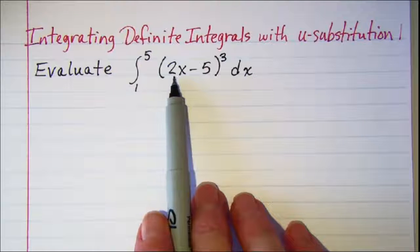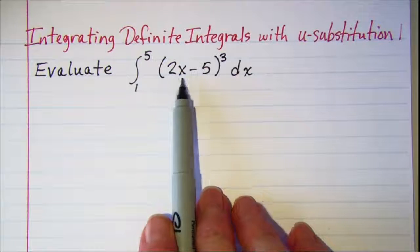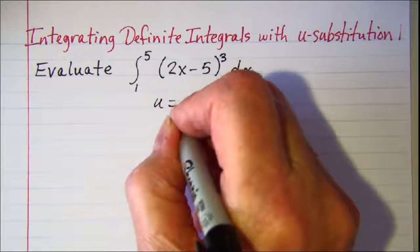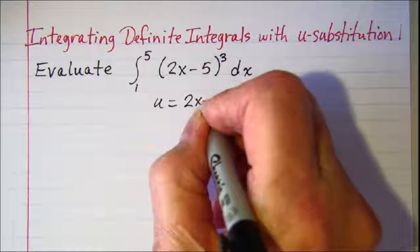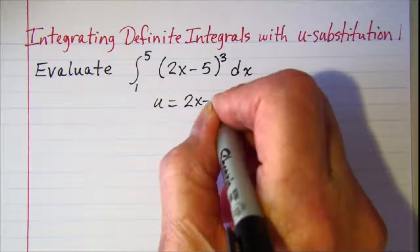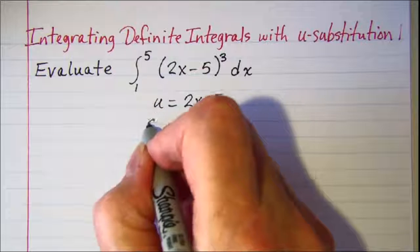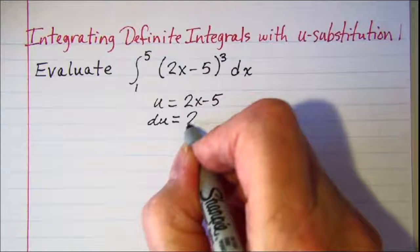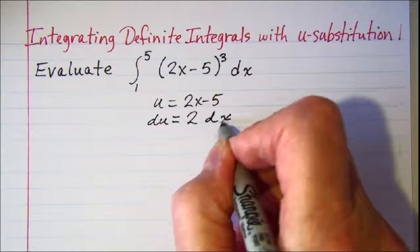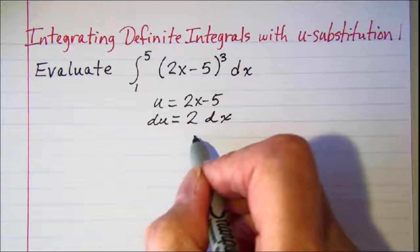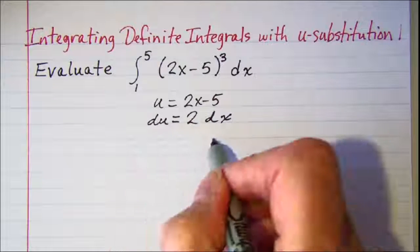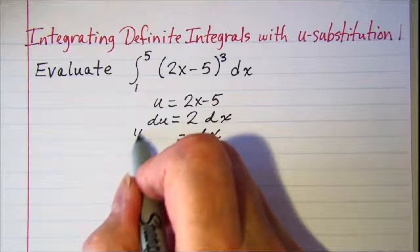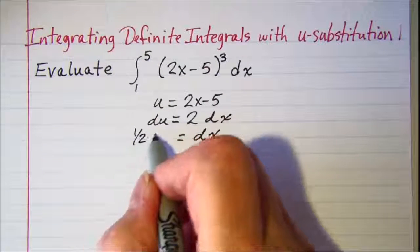We first need to choose an expression for u, so we'll let u equal 2x minus 5. Then du is equal to 2 dx, and dividing both sides by 2 we get dx is equal to one half du.